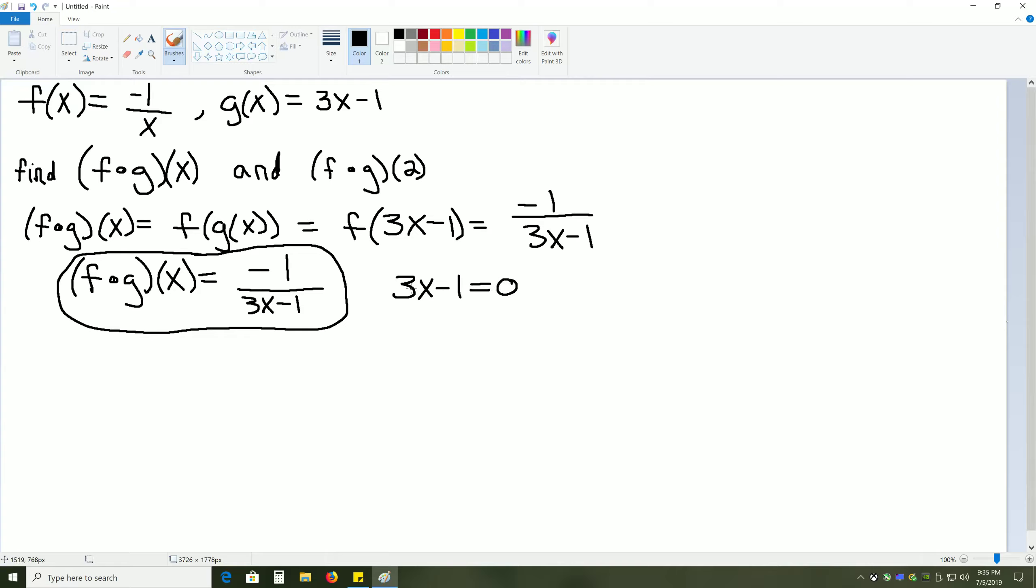And solve to find what x value causes division by 0 in our problem. So adding 1 to each side, we get 3x equals positive 1. And then dividing each side by 3, we get x equals 1 third.